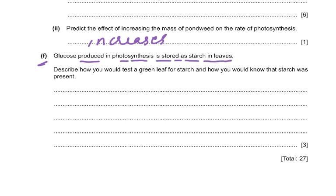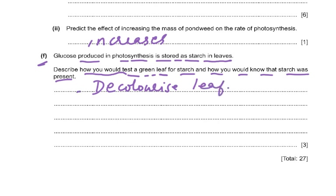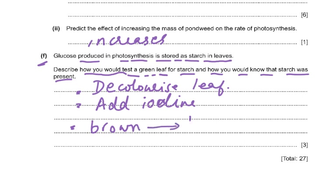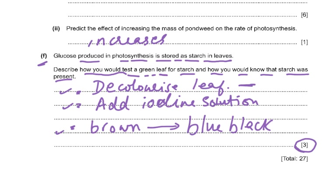The last part of question one: glucose produced in photosynthesis is stored as starch in the leaf. Describe how you would test a green leaf for starch and how you would know starch was present. First, decolorize the leaf by boiling it in ethanol to remove the chlorophyll. Then add iodine solution. If starch is present, the color changes from brown to blue-black. These three points earn three marks.